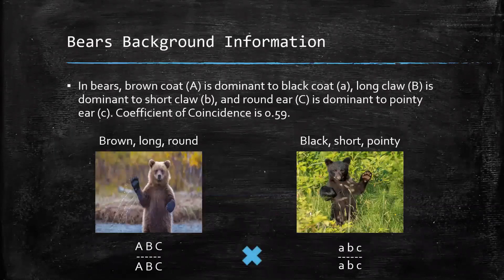For our genetic mapping example, we are going to be using bears as our subject animal. As you can see, brown coat is dominant to black coat, long claw is dominant to short claw, and round ear is dominant to pointy ear. For our example, the coefficient of coincidence is 0.59.